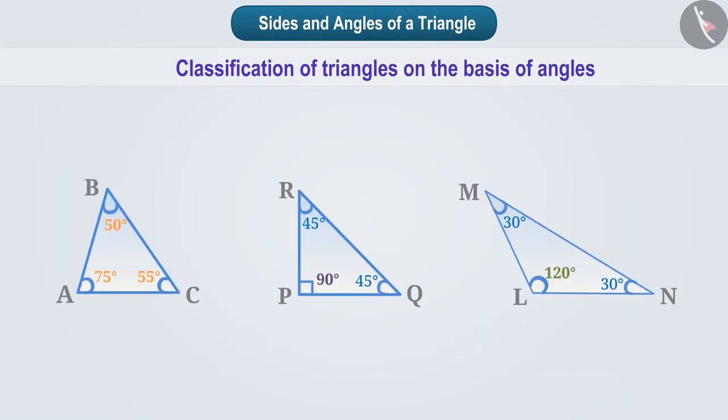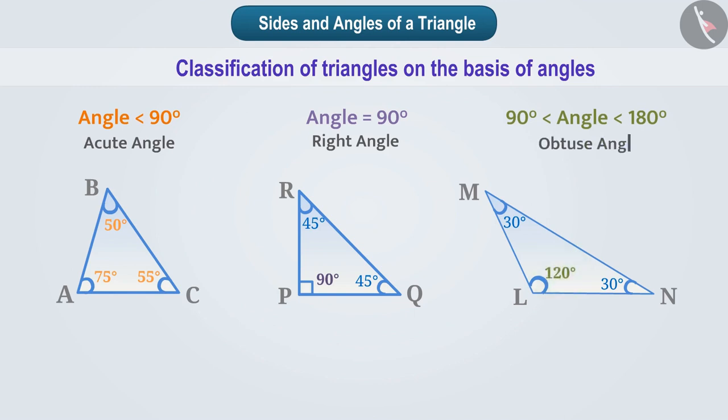We can also classify triangles on the basis of angles. You must remember that an angle smaller than 90 degrees is called an acute angle. An angle of 90 degrees is called a right angle. And if the angle is more than 90 degrees but less than 180 degrees, then it is called an obtuse angle. Now, let's classify triangles based on angles. A triangle with all angles acute is called an acute angled triangle.